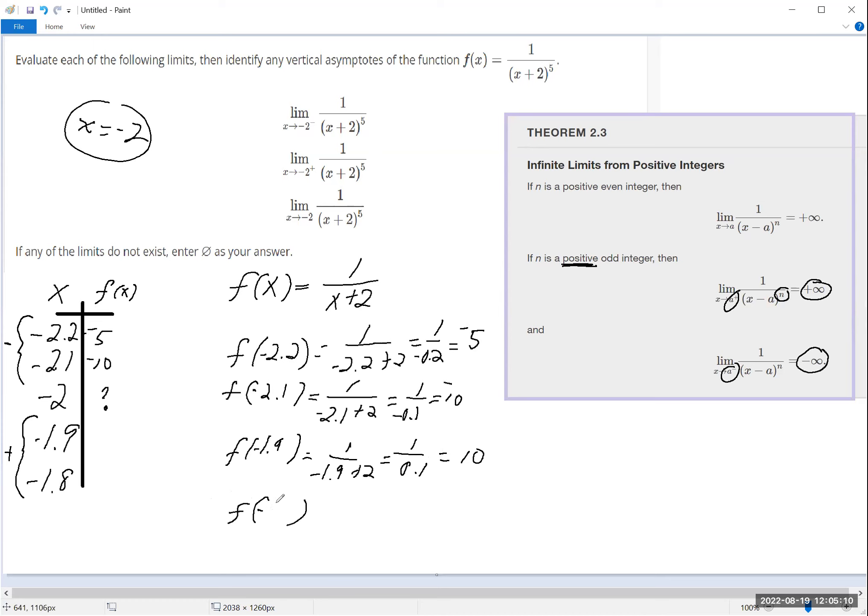Which makes these negatives because over here I have 0.1 and that would be positive 10, so I was able to catch that over here. If I have negative 1.8, so it's 1 over negative 1.8 plus 2, that's 1 over 0.2 which is 5.